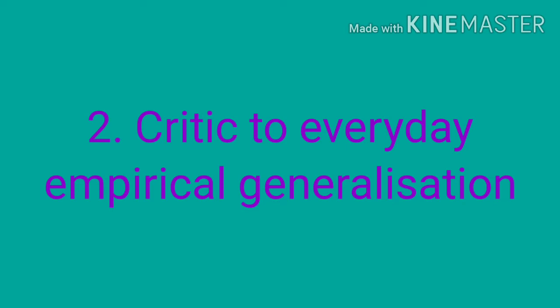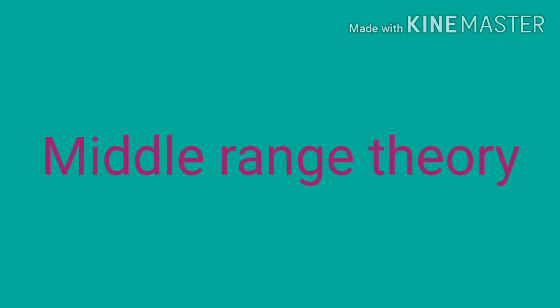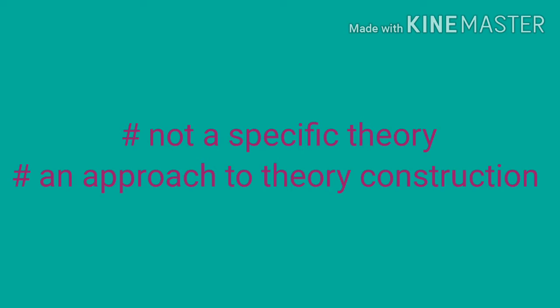Merton argues that sociology should not focus only on everyday empirical generalization, and also should not go for a grand theory. The problem with grand theory is that it is more abstract and hence difficult to test empirically. The problem with empirical research is that it is too much empirical and therefore very difficult to form a theory. So Merton believed that sociology should develop a middle-range theory. Keep in mind that middle-range theory does not refer to a specific theory — it is not a theory but an approach to theory construction, providing a way for constructing theory.